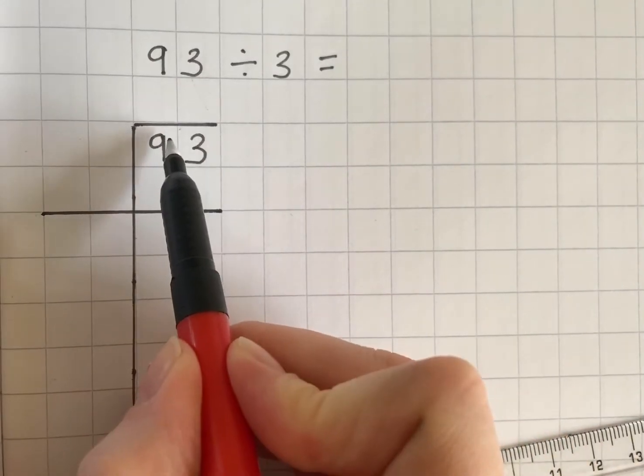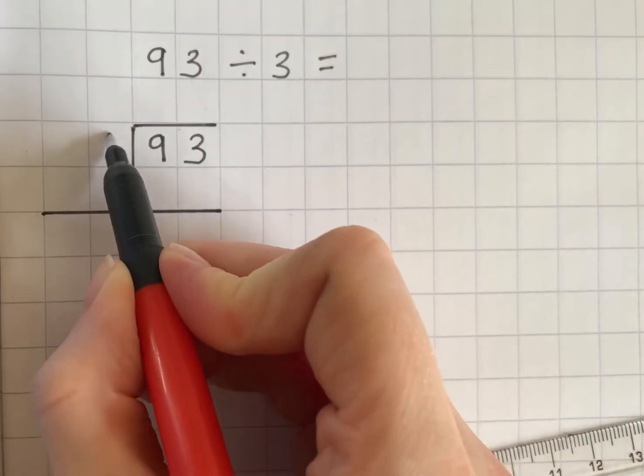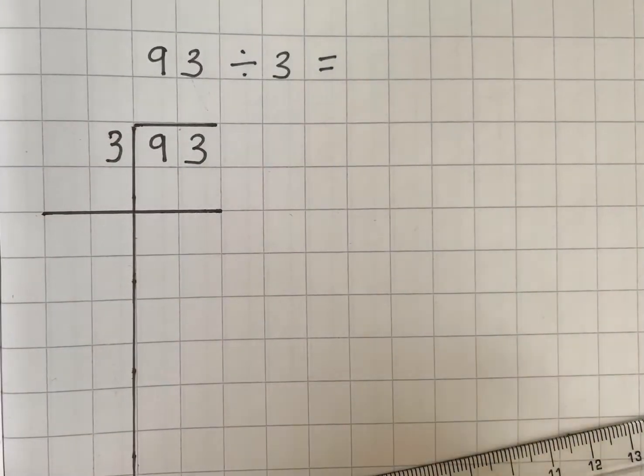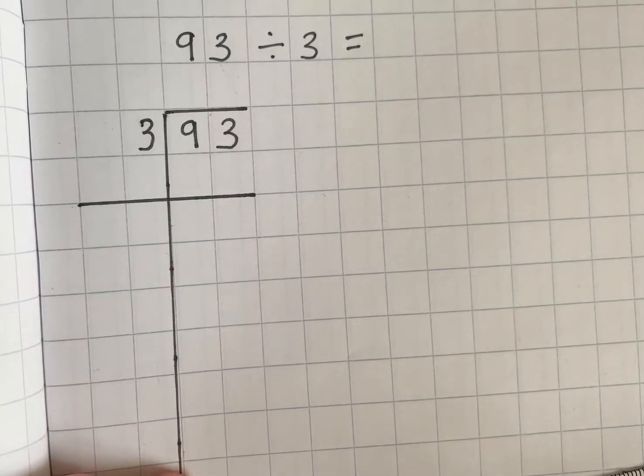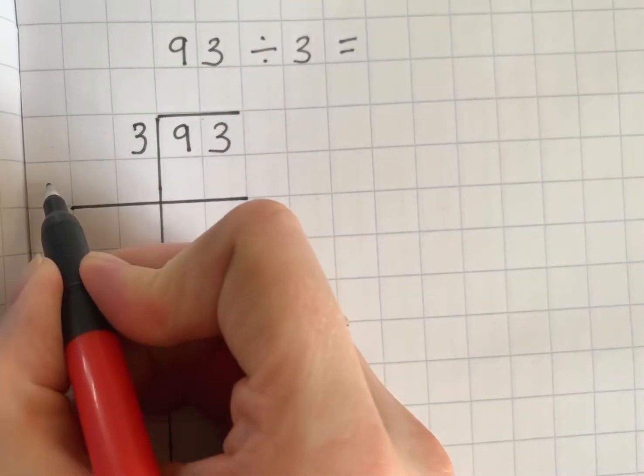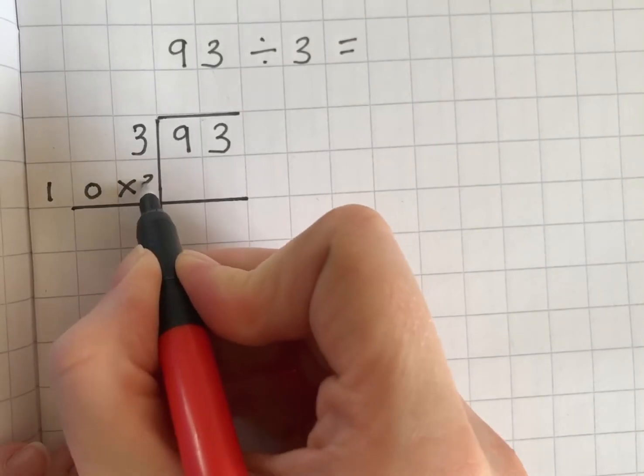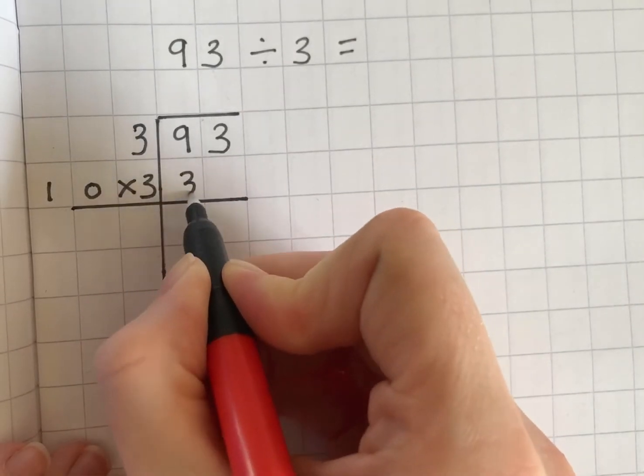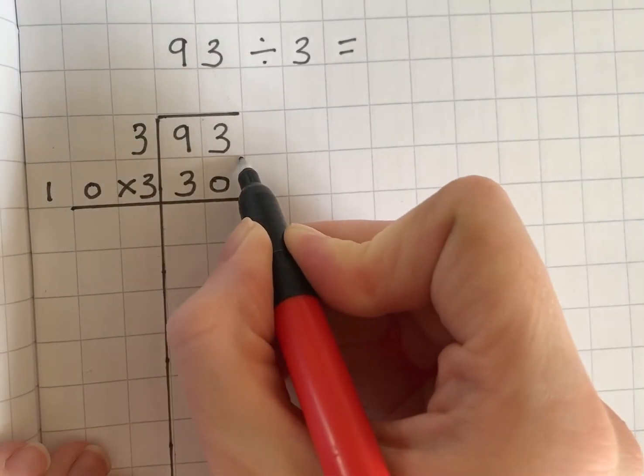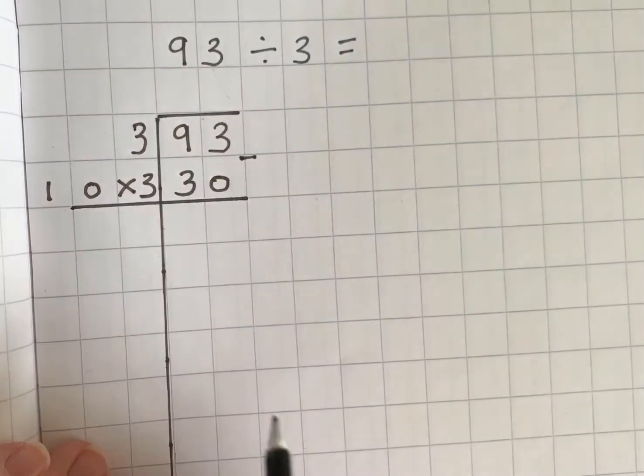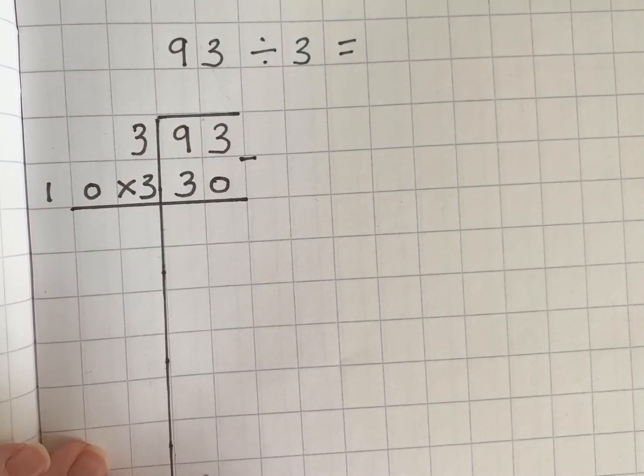So remember you need to do 93 and then put the number 3 here to show that you are dividing by 3. So the first chunk I can take away is 10 times 3 which is 30 and then we are going to do a subtraction so don't forget your subtraction sign.